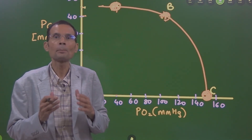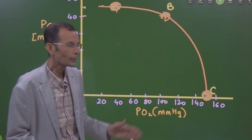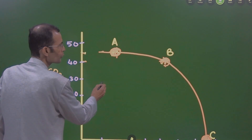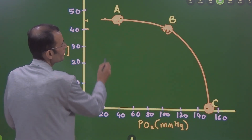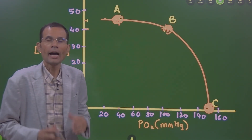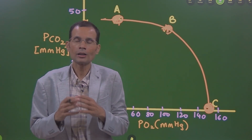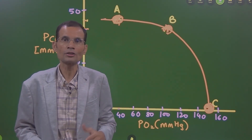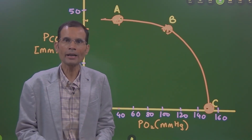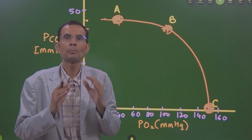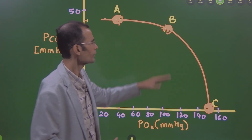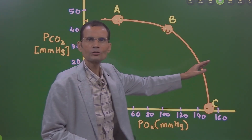— and on the horizontal axis, we have PO2 in the alveolar air. We need to focus on three points: A, B, and C. In the exam, the question was which point depicts pulmonary embolism.